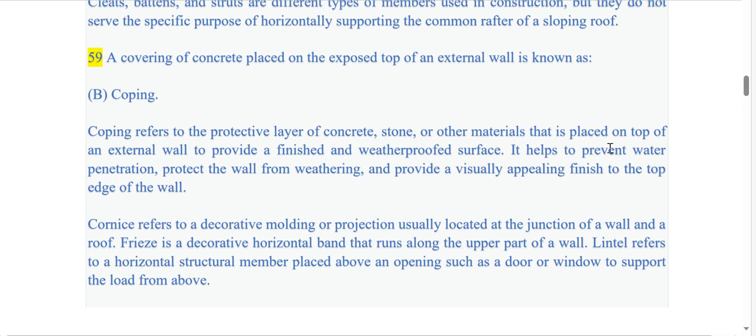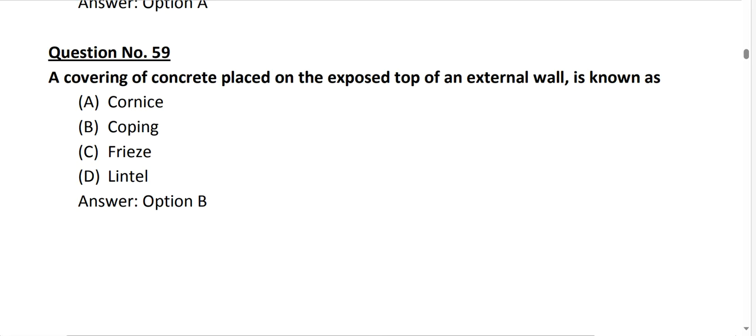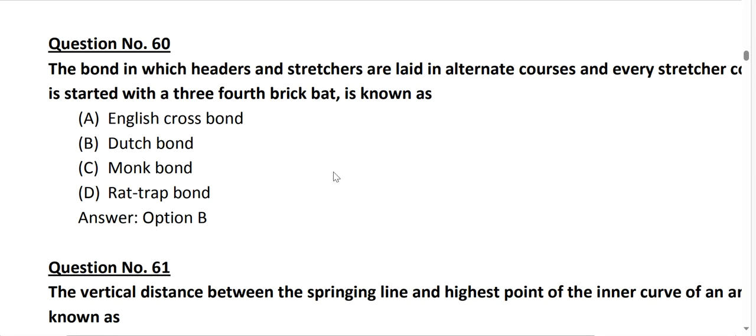Purline is basically placed horizontally. A purline is a horizontal structural member that is typically made of wood or metal and is placed parallel to the slope of the roof. It provides support and stability to the common rafters in the sloping roof. Purlins are often placed at regular intervals along the length of the roof. Next question number 59, a covering of concrete which is placed on the exposed top of an external wall is known as coping.